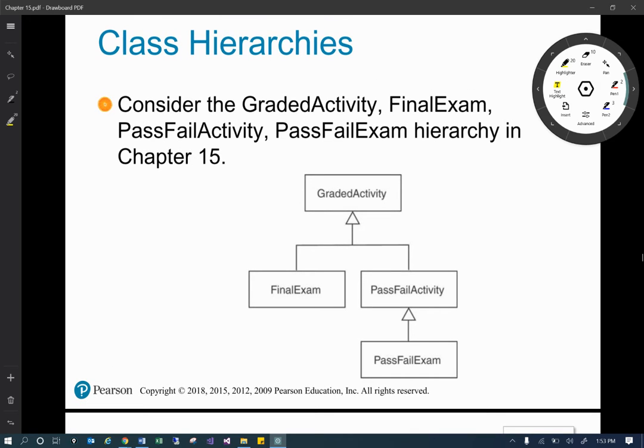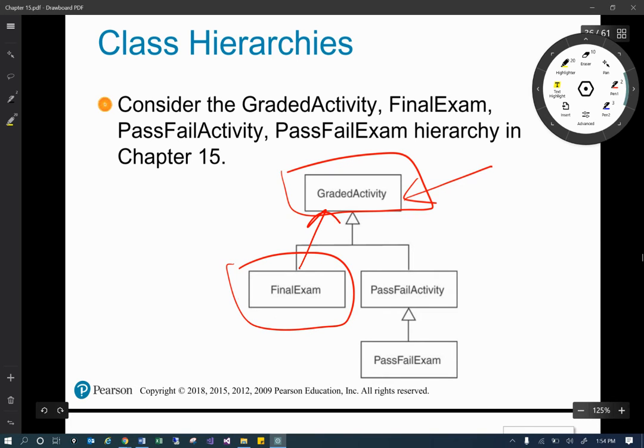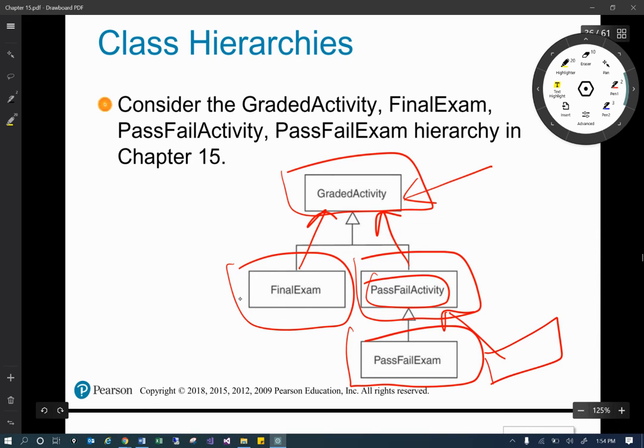So here's a good example of class hierarchy. We've got this graded activity, which makes sense, right? This is kind of a generic, more of a generic type, where a final exam is of graded activity, and then this pass-fail activity is of graded activity as well. Now what we've done is we've also said that this pass-fail exam is of type, is of class-fail activity. So again, maybe at some point we're going to do some other kind of, maybe we say A, B, C pass, D, F fail, and a class, however we want to do it. So again, just an example of a hierarchy.